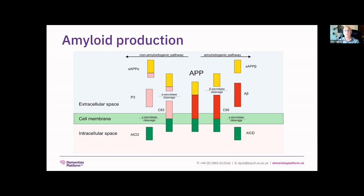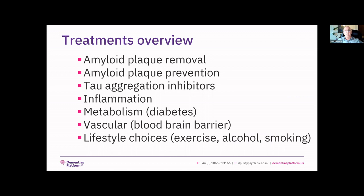In terms of treatments, one approach is plaque removal, another is plaque prevention. For tau — thought to precede plaque — people are investigating aggregation inhibitors. More systemic approaches look at inflammation, metabolic interventions, and vascular interventions. Then there are lifestyle choices: exercise, alcohol, and smoking. There is some discussion over whether there is a beneficial level of alcohol. My personal view is that that is very unlikely — ethanol, no matter how high quality, is effectively a poison to the brain.